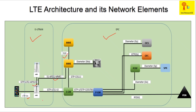The interface between eNodeB and the SGW is S1U, and the protocol used is GTPU. The interface between the MME and the SGW is S11, using the GTPC protocol. The interface between the MME and the HSS is named S6A, and the protocol used is the Diameter protocol.